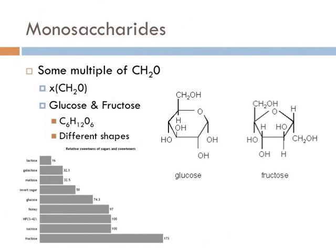You might think: why are there two different names for something with the same molecular formula? Well, if you look at the structural formula, you will see that they have different shapes, and those shapes cause them to behave differently in a chemical sense. If you look at the graph on the lower left-hand of this slide, it shows the sweetness of all monosaccharides. Fructose has the highest sweetness, whereas glucose is right in the middle — less than half as sweet as fructose. So you can see that chemical shape has very important effects on chemical reactions.